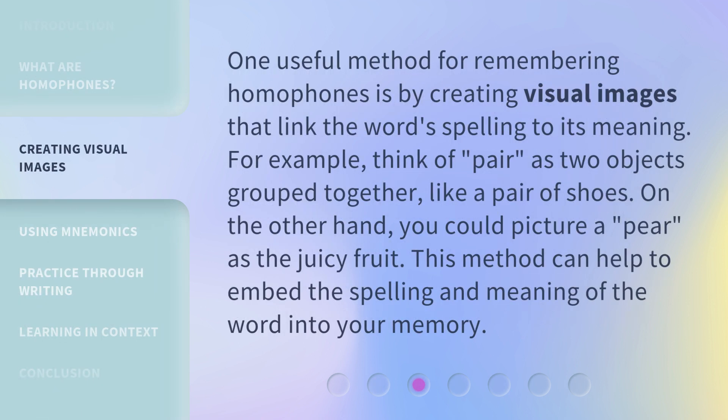One useful method for remembering homophones is by creating visual images that link the word's spelling to its meaning. For example, think of 'pair' as two objects grouped together, like a pair of shoes. On the other hand, you could picture 'pear' as the juicy fruit. This method can help to embed the spelling and meaning of the word into your memory.